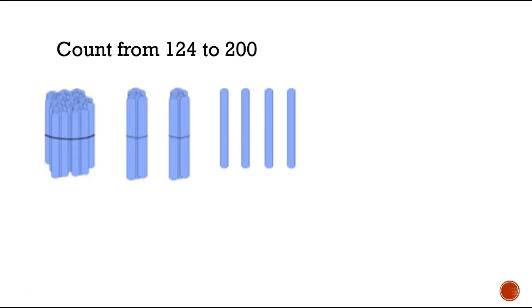Now we need to count from 124 to 200. I already got our 124 up here. And we need to add some more: 124, 125, 126, 127, 128, 129, 130. Should we still count by ones or should we move to another bundle? Which bundle should we use? Should we move to the bundle of tens or the bundle of hundreds?